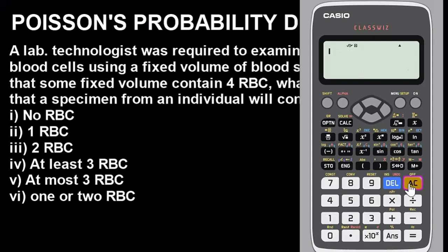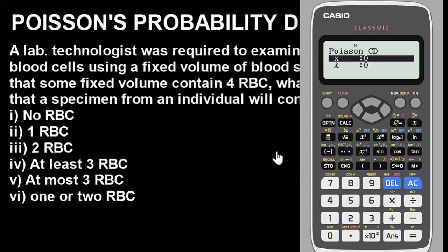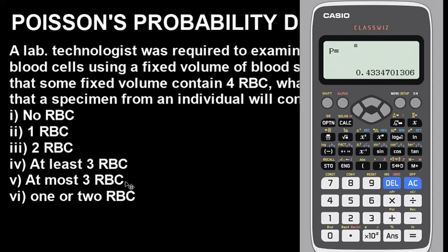For 'at most,' go back to Menu, option 7, and select Poisson CD. Press variable. For 'at most,' you do not need to decrease or increase the number — use the exact value. For 'at most three red blood cells,' enter x equals 3 and lambda equals 4, then press equals. The result displayed is the answer for 'at most three red blood cells.' It's as simple as that.